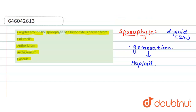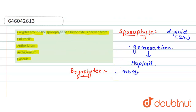Now let's move towards bryophytes and their characteristics. Bryophytes are non-vascular in nature. They develop a thalloid structure, meaning roots, leaves, and stems are not differentiated.